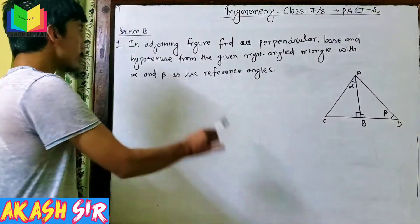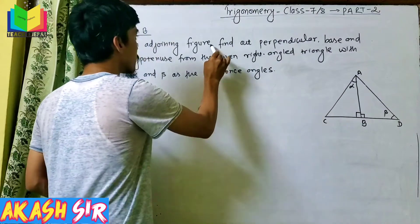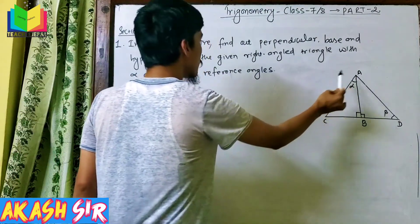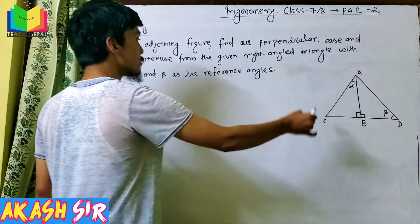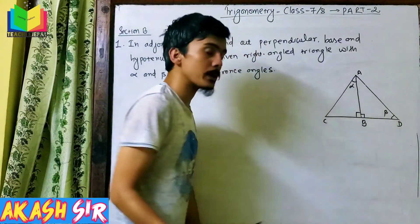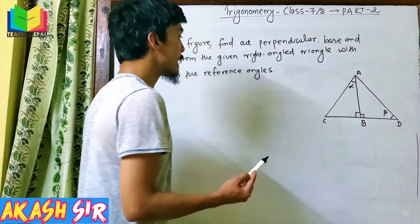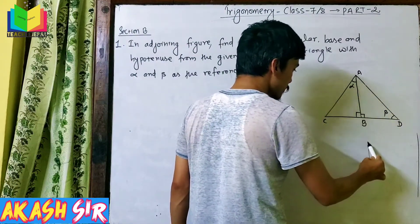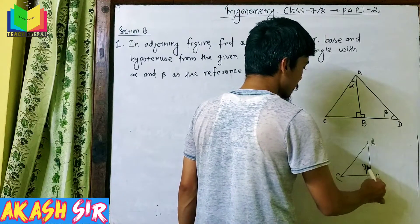So, what is the question of this figure? In the adjoining figure, find out the perpendicular, base, and hypotenuse from the given right angle triangle. In this figure, find out the right angle triangle which has a reference angle with alpha and beta as a reference angle. With alpha and beta as a reference angle, find out the right angle triangle.